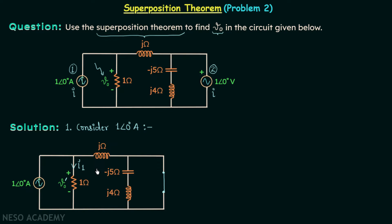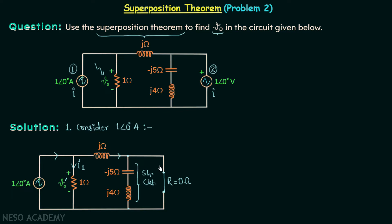To find I1, we use the fact that this resistor and this inductor are connected in parallel, and the total current entering is 1∠0° ampere. They are in parallel because this branch is short-circuited — this node and this node are connected by a zero-resistance wire. Therefore, when current reaches this node it goes entirely through this wire, not through this branch, since the wire offers zero ohms and current chooses the path of least resistance. Hence no current flows in that branch.